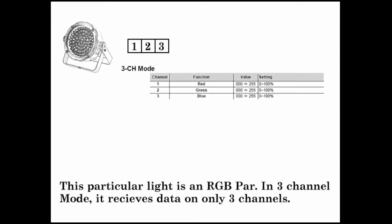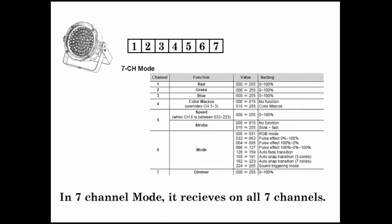This particular light is an RGB PAR. In 3 channel mode, it receives data on only 3 channels. In 7 channel mode, it receives data on all 7 channels.